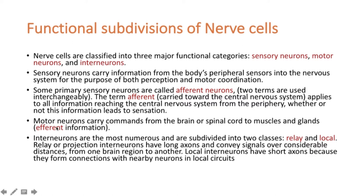There are some neurons which are neither at the receptors nor connected to the muscles. They are in between and make connections sometimes between sensory and motor neurons, or sensory to sensory, or motor to motor. These are called interneurons, and they are in fact the most numerous. They are subdivided into two classes: the relay type and the local type. The relay or projection interneurons have long axons and convey signals over considerable distances from one brain region to another. Local interneurons have short axons and form connections with nearby neurons in local circuits.